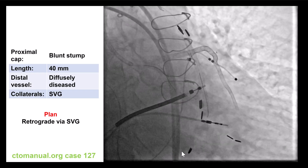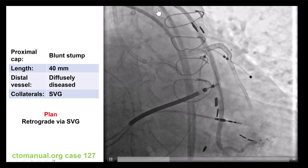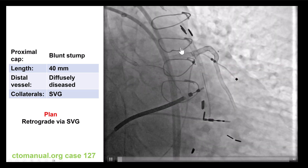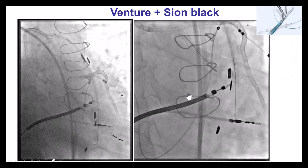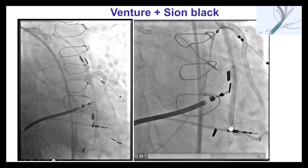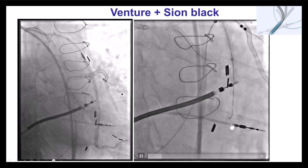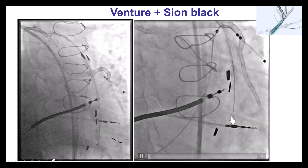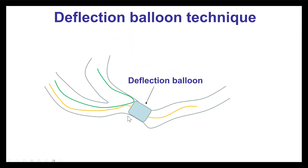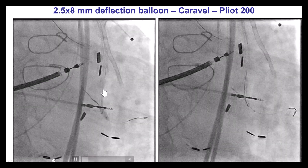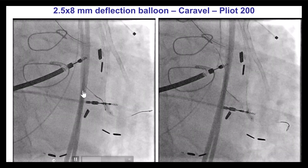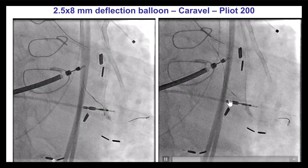This is an example of a deflection balloon. We have this saphenous vein graft going to the obtuse marginal branch. This graft had recurrent failure and we wanted to recanalize the native circumflex. We had difficulty delivering the wire retrograde — the angulation is fairly tight. Despite using a Venture and a polymer-jacketed Xeon Black wire, we were not able to do so. But then we inflated a balloon just distal to the vein graft touchdown, and after doing that, we were able to deflect a Pilot 200 wire to go retrograde and then deliver the microcatheter over it.